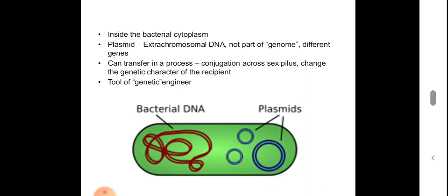About plasmids: plasmids are extra-chromosomal DNA and are not part of the genome. They are extra to the chromosomal DNA. These plasmids carry genes for antibiotic resistance, fertility, etc. Plasmids can be transferred from one bacterium to another during conjugation using sex pili, and this will change the genetic character of the recipient bacteria. Plasmids are also an important tool in genetic engineering and biotechnology — in gene cloning, we use plasmids as vectors.